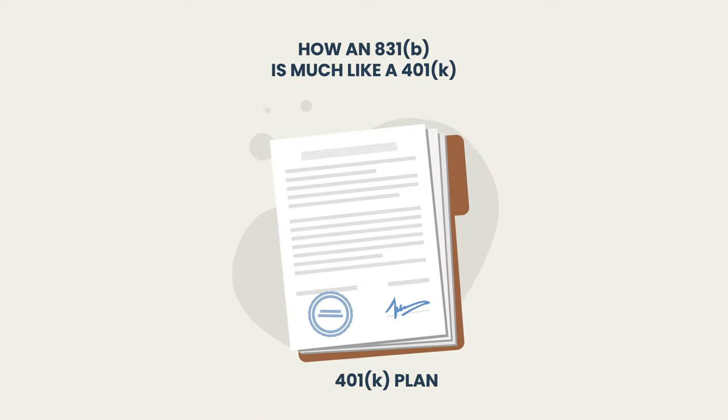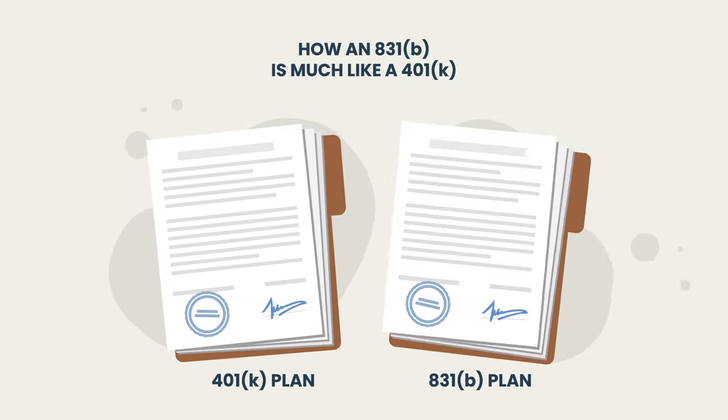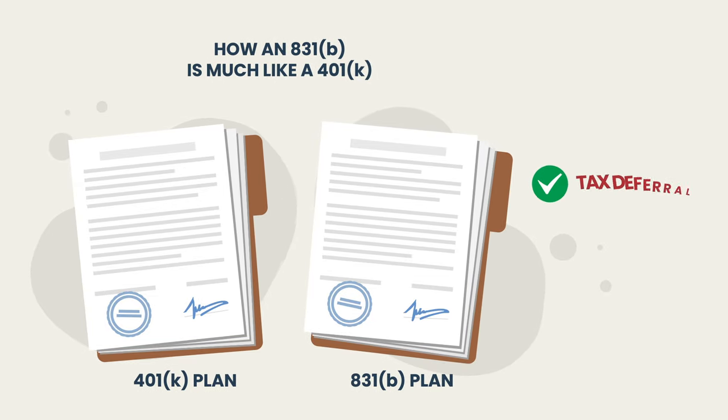Like a 401K plan that allows for tax deferral for retirement savings, an 831B plan allows for tax deferral to self-insure risks that are either underinsured or uninsured altogether.